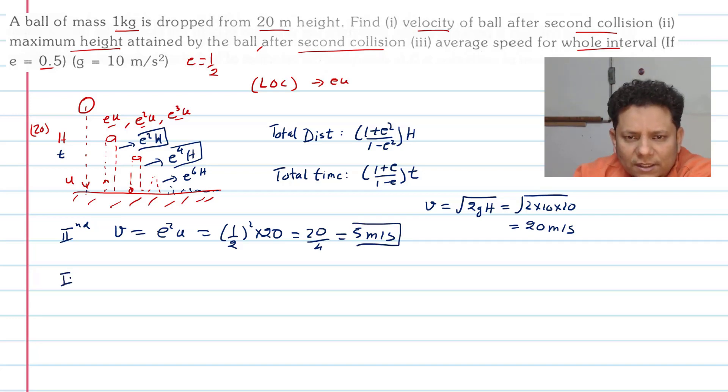So velocity after second collision is (1/4)×20 = 5 m/s. In the last part, height will be e⁴·H, which is (1/2)⁴×20. This is 20/16, so this will be equal to 5/4 meter or 1.25 meter.